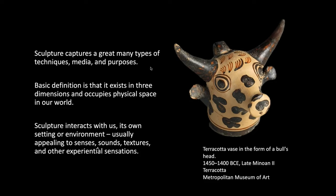Here we have a wonderful little bull from the Minoan culture from Crete, Greece's largest island to the south. The Minoans really liked bulls — it was a sacred animal to them and a favorite subject of representation. This is a vase from around 1400 BCE — very ancient. When you see the word 'vase' next to something this ancient, it's not a vase for flowers as we'd normally think of it.